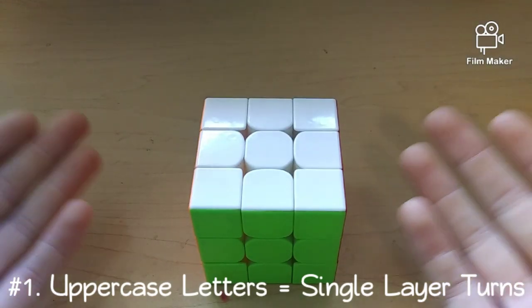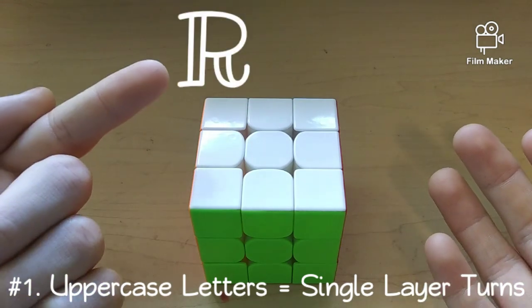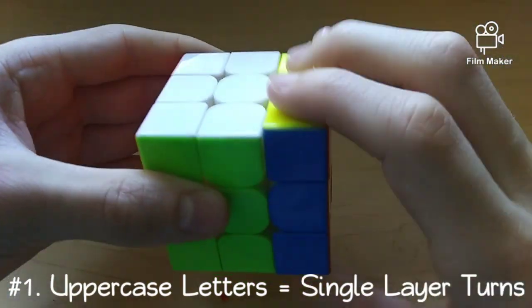Starting off with rule number 1, an uppercase letter, like this, signifies a single layer turn on the cube.